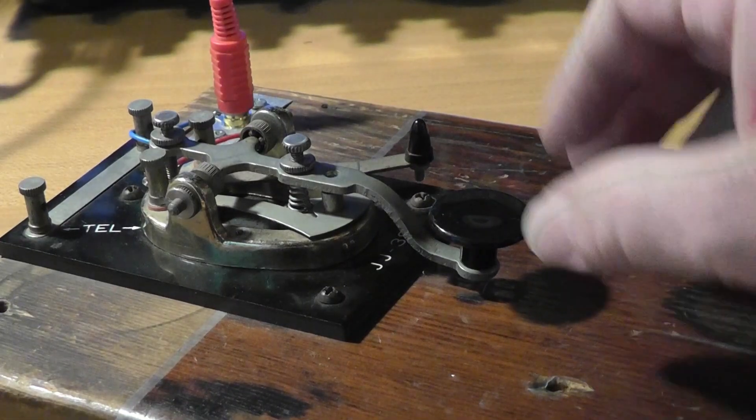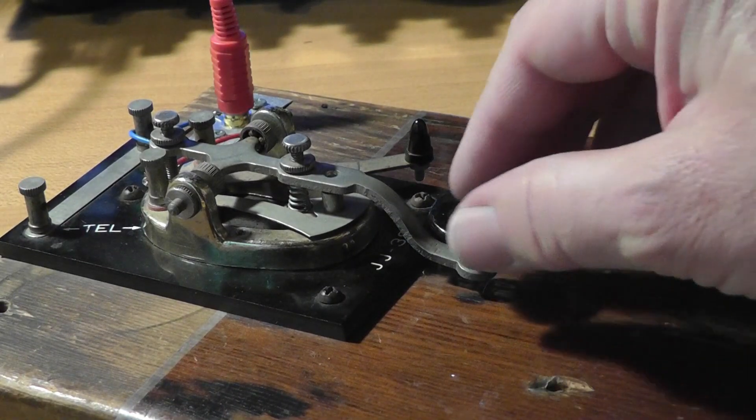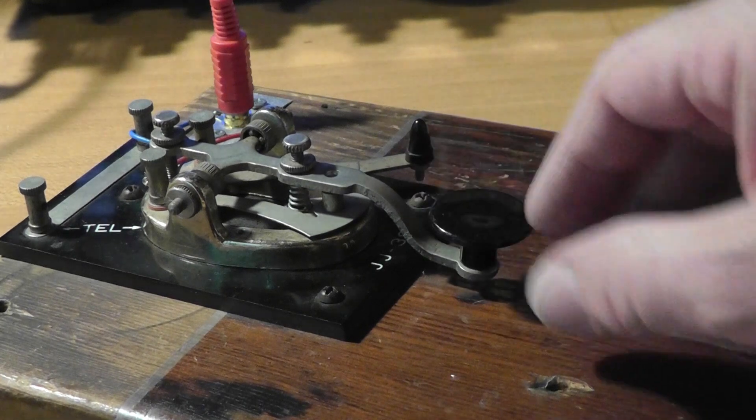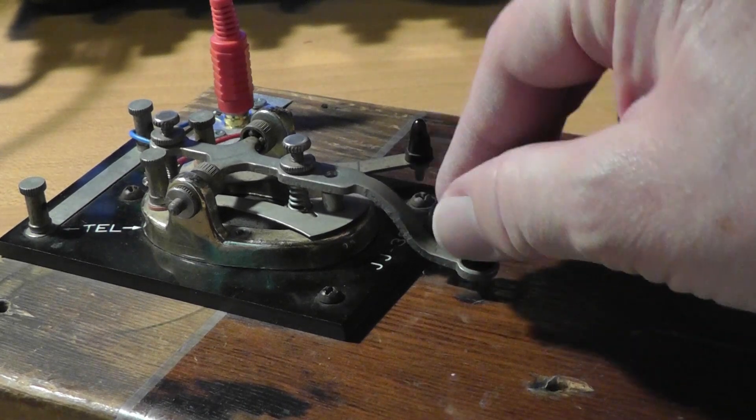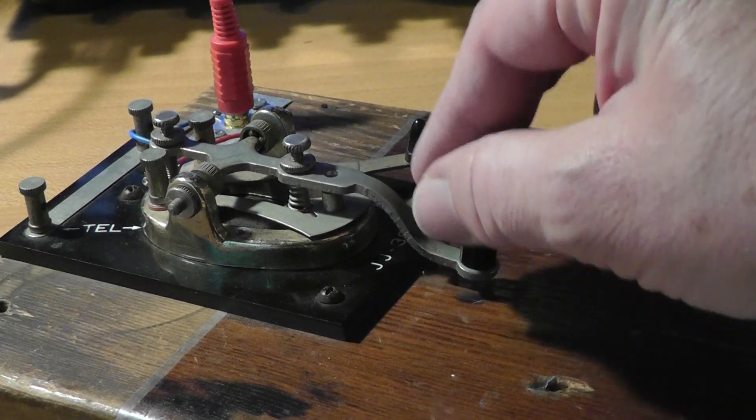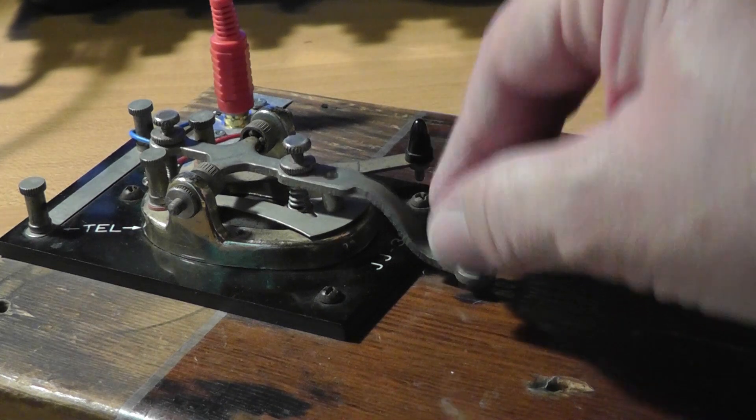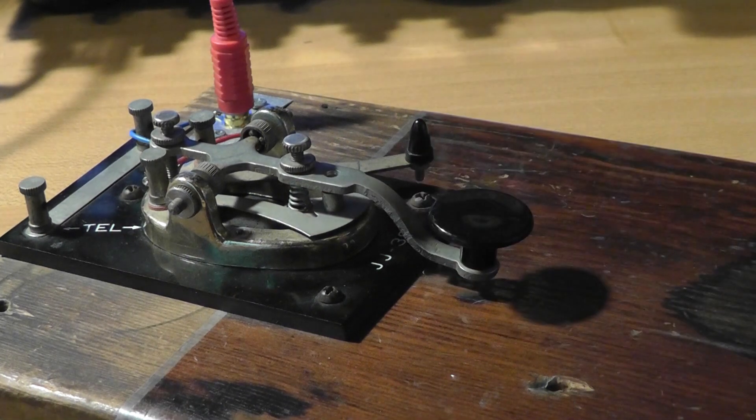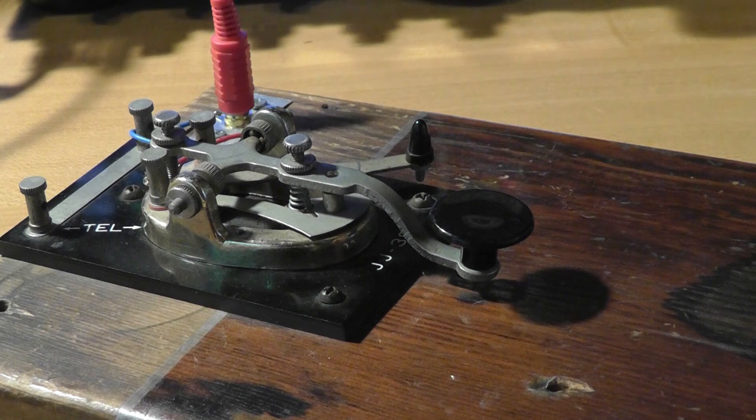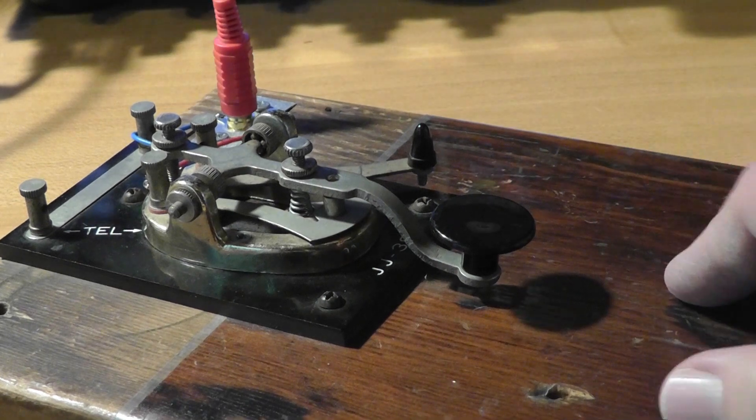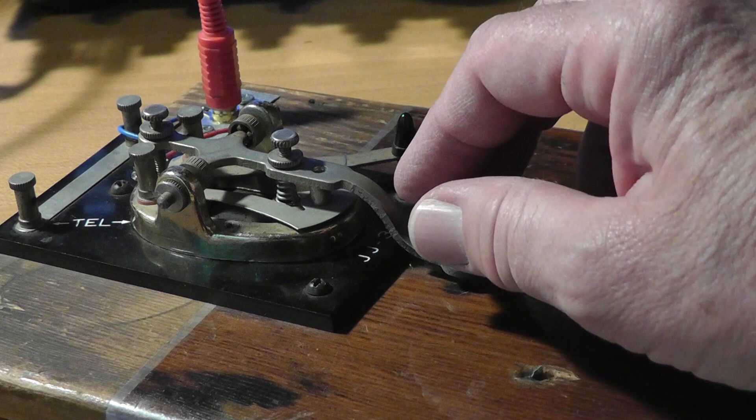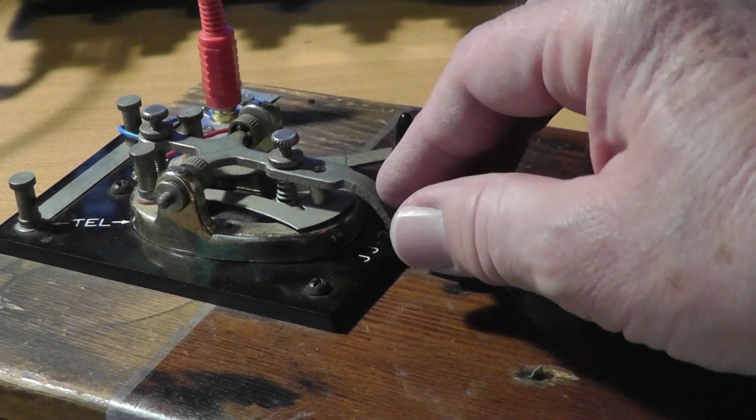That means you have to learn to send as well as receive. Your dots need to be crisp and all of the same length. The same with your dashes. The most common mistake I hear from those new to CW is that their dashes and dots are about the same length. It's really hard to copy.